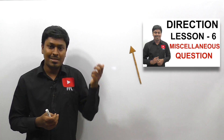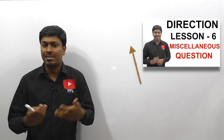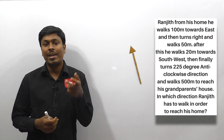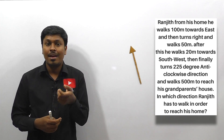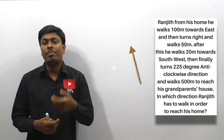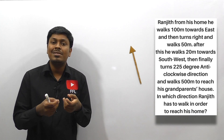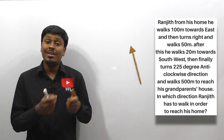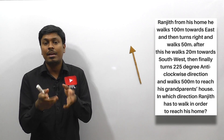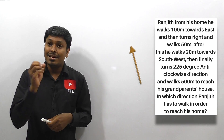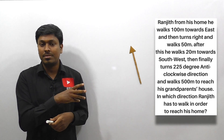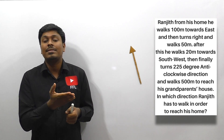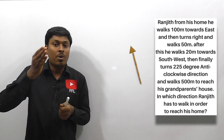In my YouTube channel I have already posted six different lessons on the topic direction, starting from lesson number one (basic) up to miscellaneous questions. But recently in some campus interviews like IBM, Infosys, and TCS, I have found a new pattern in direction questions where my students are making small mistakes. These are the questions most expected in upcoming IBPS PO exam. Use a small logic to crack them because this is a collection of lesson number two, lesson number four, and lesson number five.